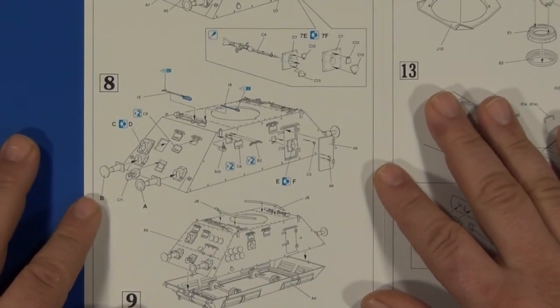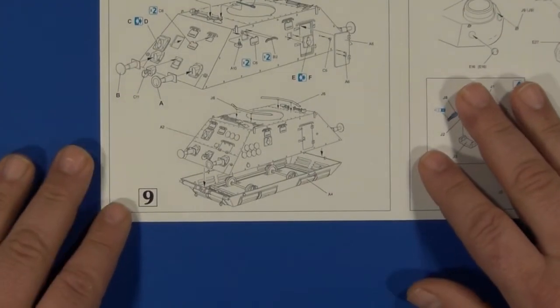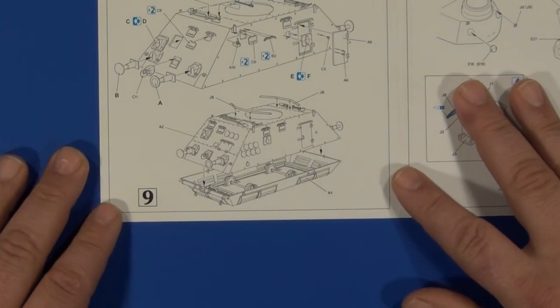Step eight: right side upper plate and rear plate details. Step nine: splash guards and joining upper and lower hull sections.